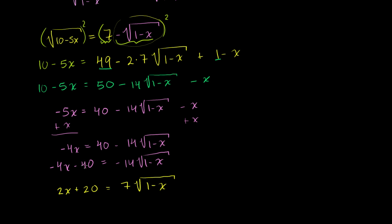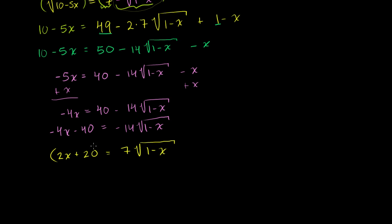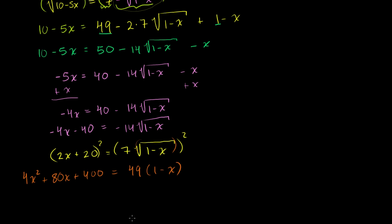We divided everything by negative 2: 40 divided by negative 2 is 20, and 14 divided by negative 2 is positive 7. We've essentially isolated the radical, and if we square both sides, that radical will disappear. Squaring both sides: the left-hand side becomes 4x² plus 80x plus 400, equals 49 times 1 minus x.